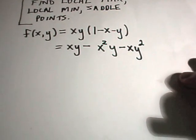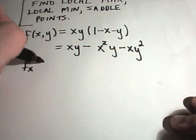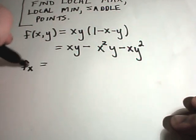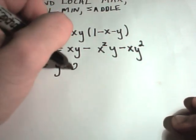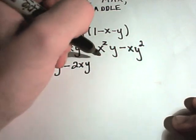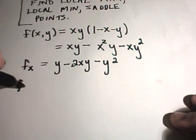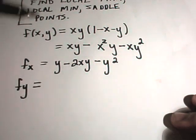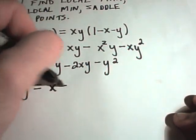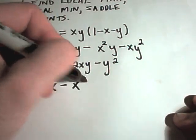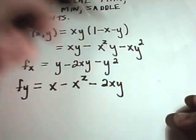So I'm going to calculate all the derivatives. If I take the partial with respect to x, so x is my variable, I'll get y minus 2xy minus y squared. If I take the partial with respect to y, now I'm treating y as my variable, I'll get x minus x squared minus 2xy.